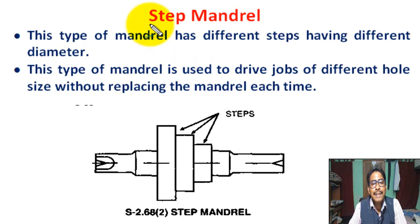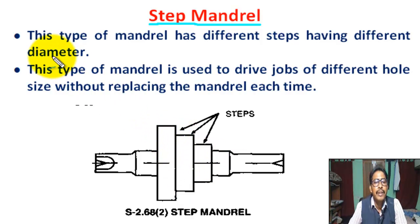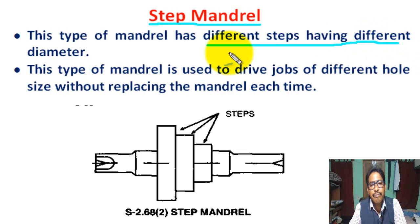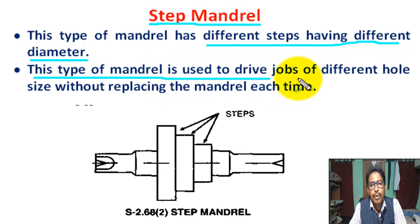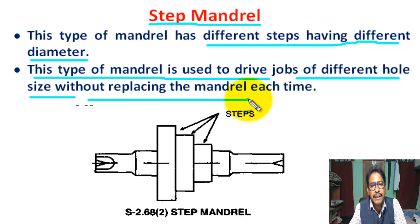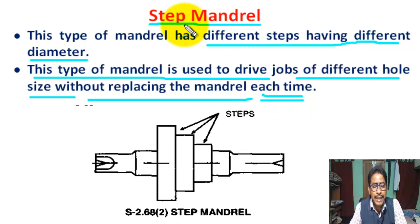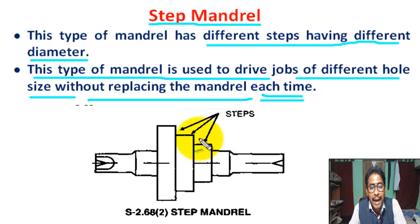Now, what is a step mandrel? This is the figure of a step mandrel. There are different steps having different diameters. This type of mandrel is used to handle jobs of different hole sizes without replacing the mandrel each time. This type of mandrel is suitable for turning collars, washers, and outside jobs used in repairing workshops.